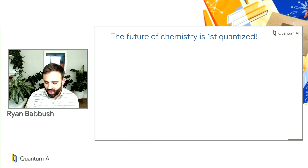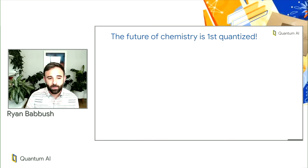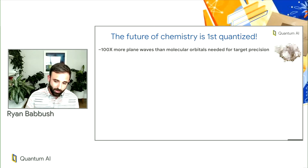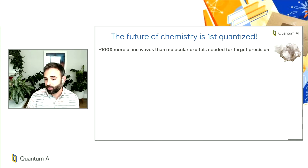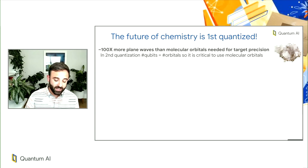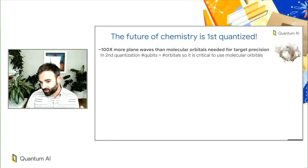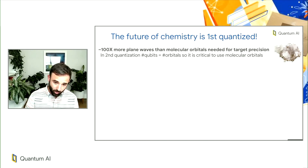I want to emphasize that there's another way of simulating quantum chemistry that I'm even more excited about. It would be really nice to perform simulations in a plane wave basis with high precision, because that would allow us to simulate materials. But you need hundreds of times more plane waves than molecular orbitals to get high precision. In second quantization, this is basically a non-starter because the number of qubits equals the number of orbitals — if you need 50,000 or 100,000 plane waves, you need that many logical qubits, which could translate to billions of physical qubits.